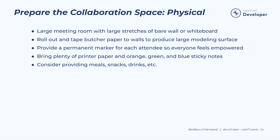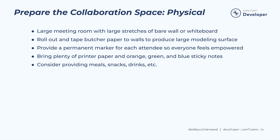For a physical in-person workshop, the facilitator must prepare the space and provide proper materials. Sticky notes adhere best to paper, so rolling out butcher paper and taping it to the walls creates a large modeling surface. Even so, sticky notes lose their stickiness after a few attach-detach cycles, so ensure that plenty of pads of orange, green, and blue sticky notes are available. Printer paper is used for modeling or wireframing interfaces. Each participant should have a marker and the proper materials in their hands. The facilitator should also consider scheduling enough breaks and organizing meals, snacks, and drinks for the attendees.